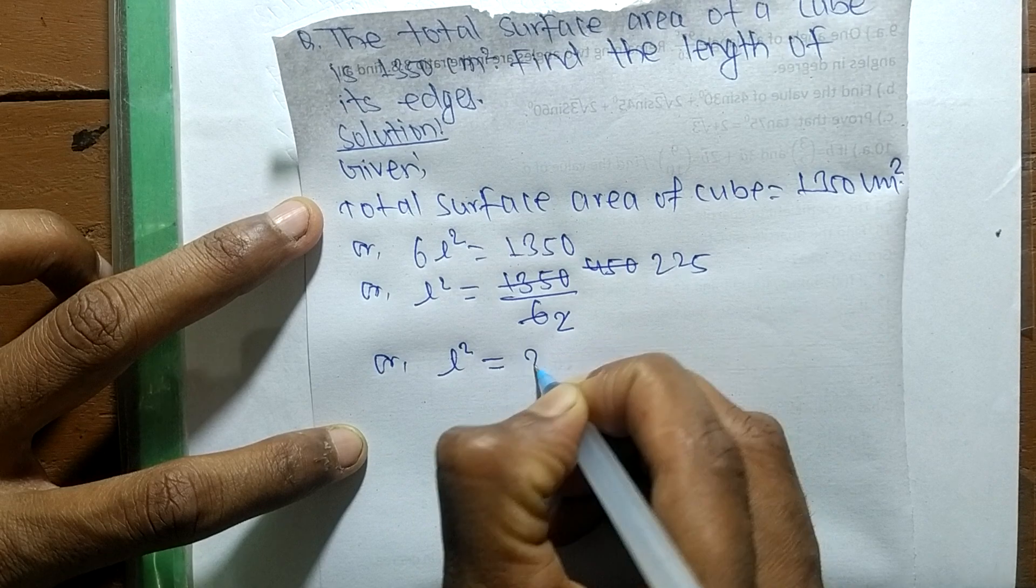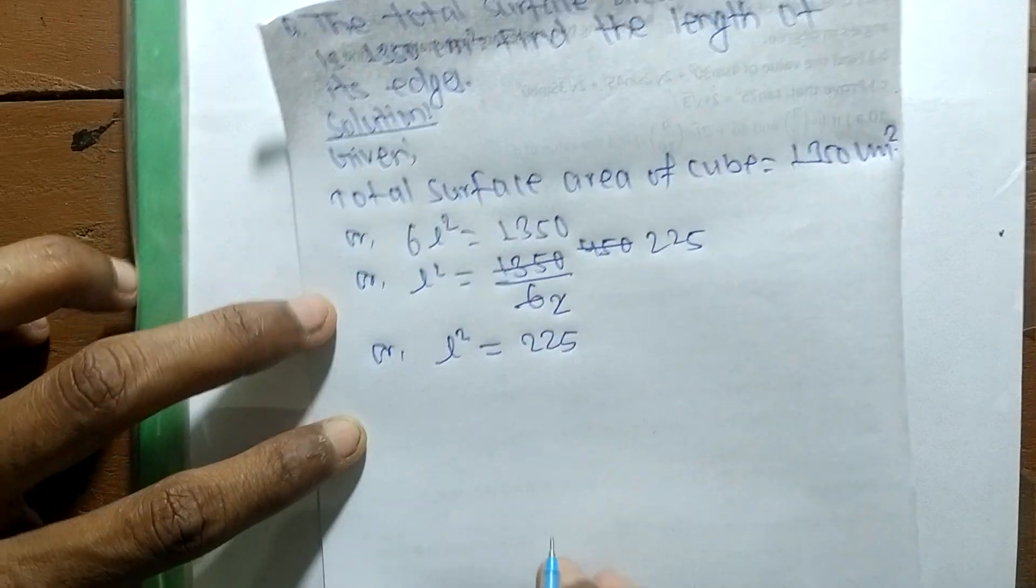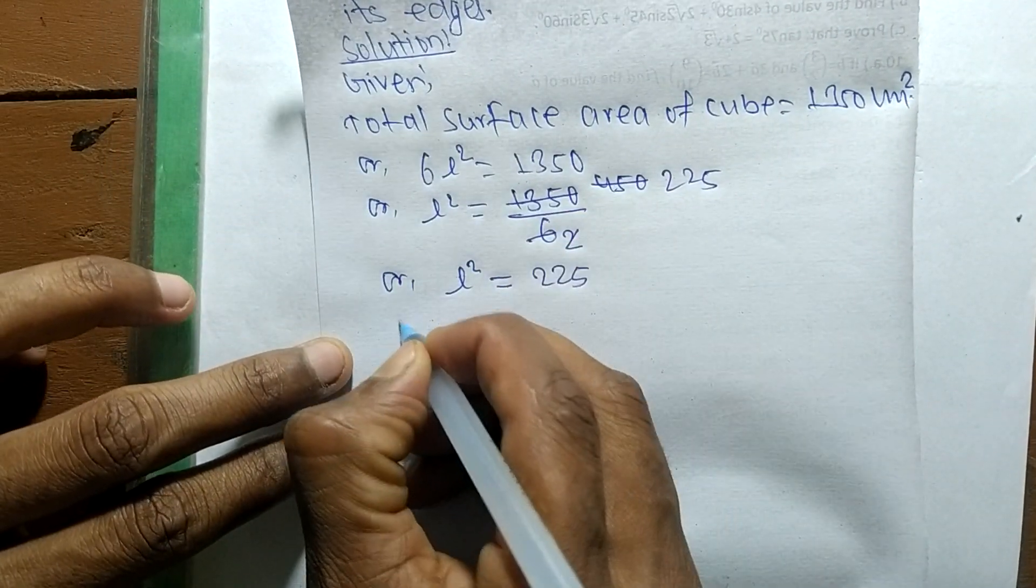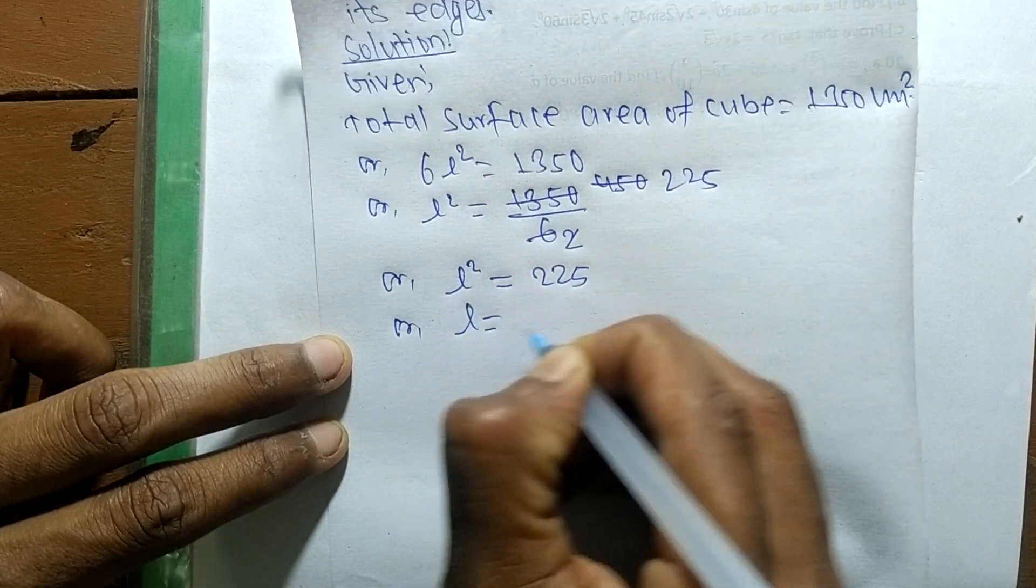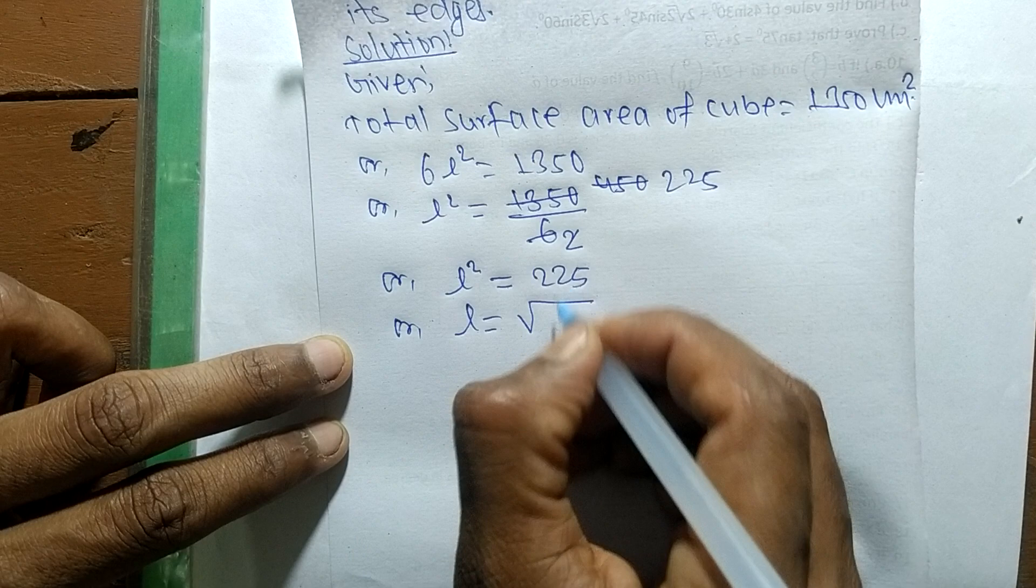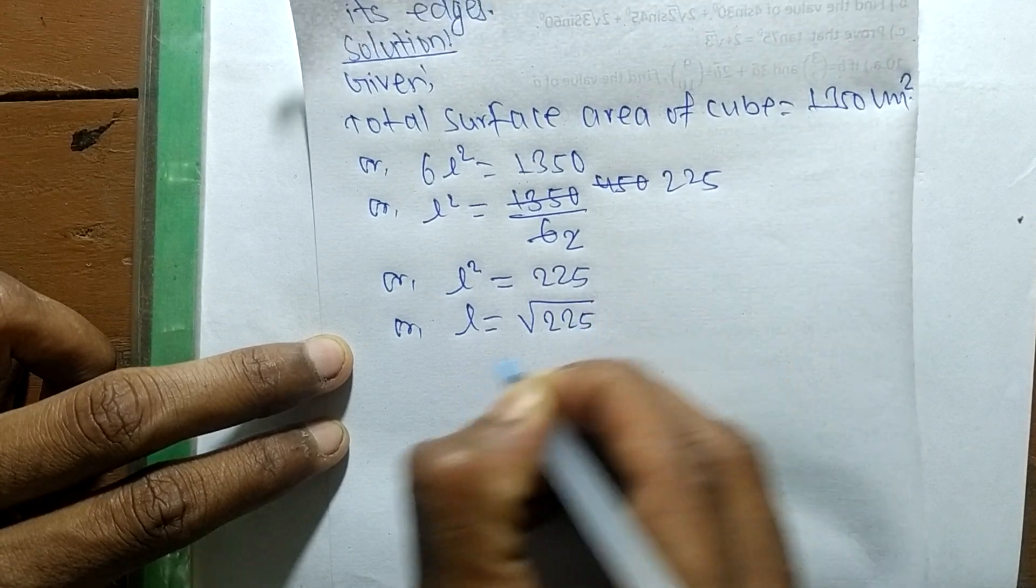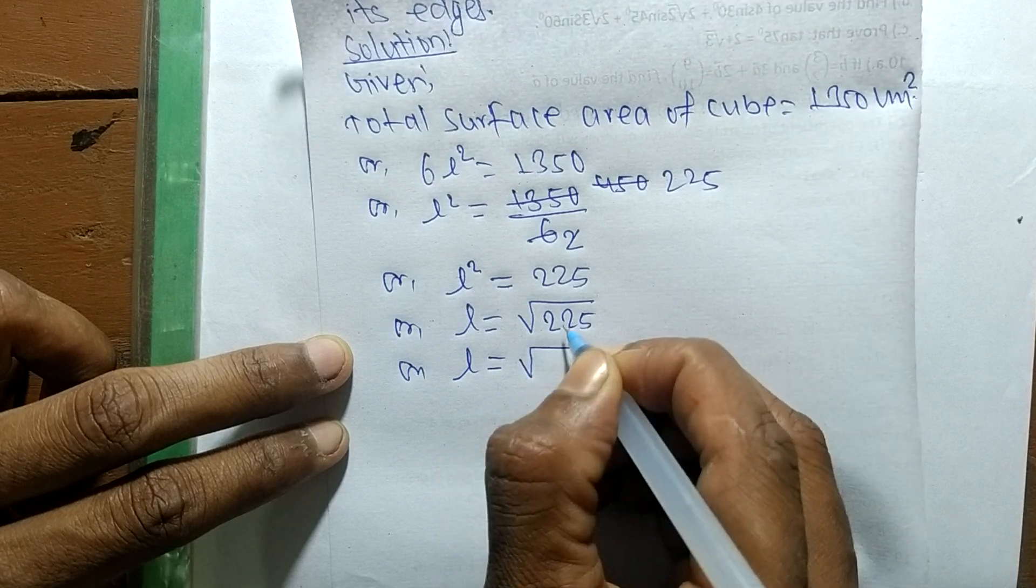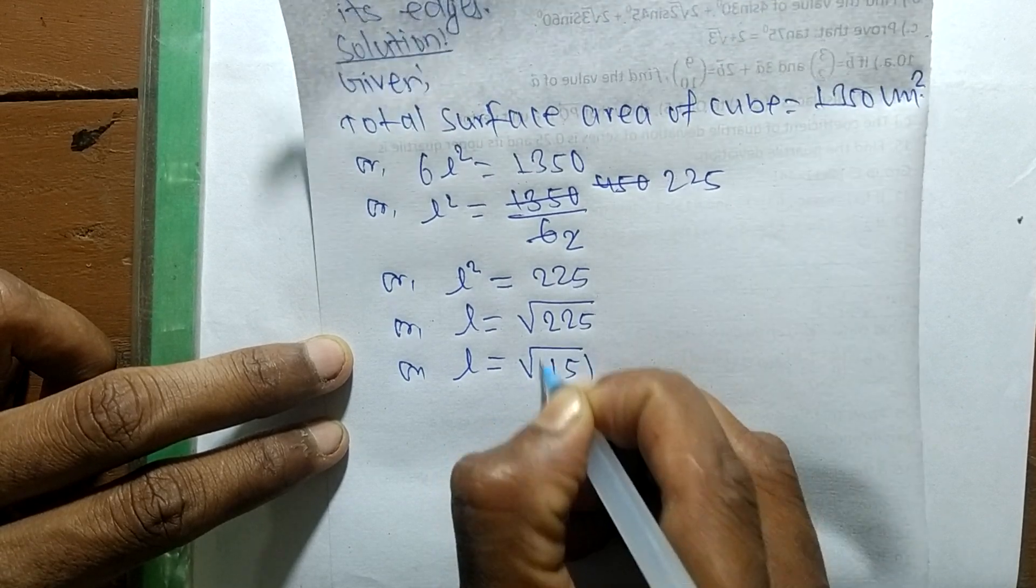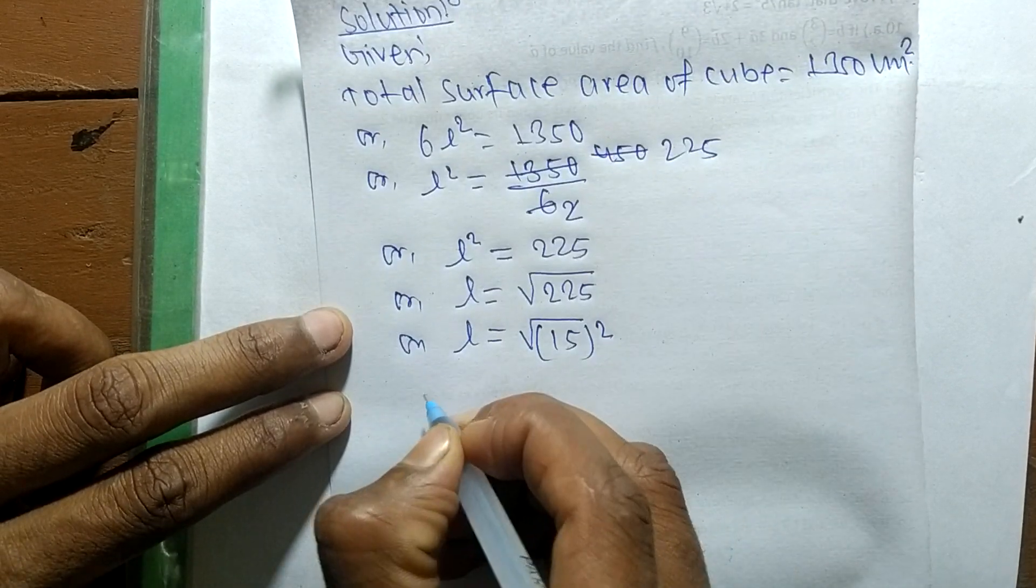So L² is equal to 225. Now here is a square, so moving to opposite side it becomes root. L is equal to √225, which means it is 15 squared. Therefore L is equal to 15.